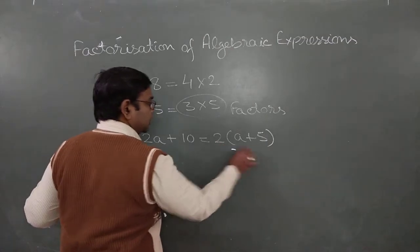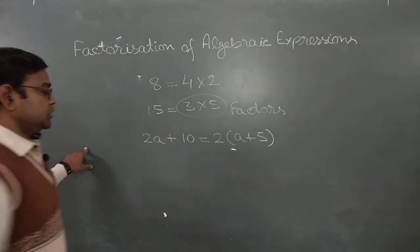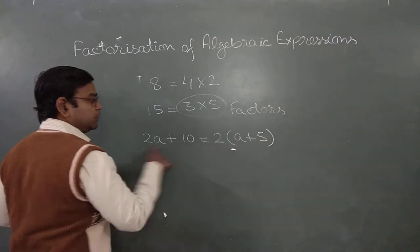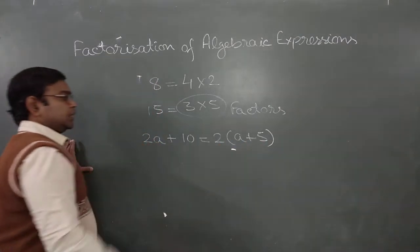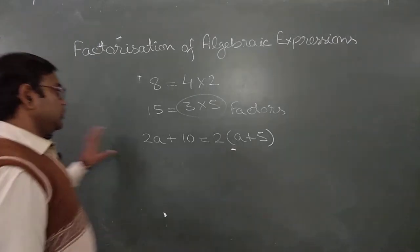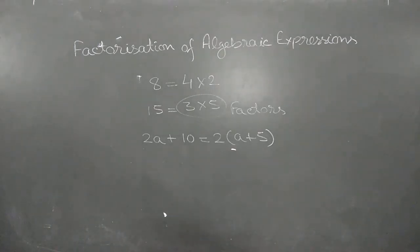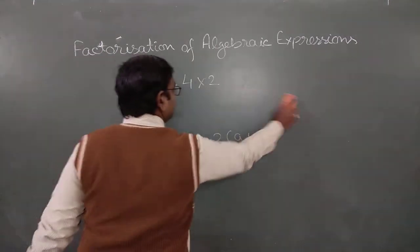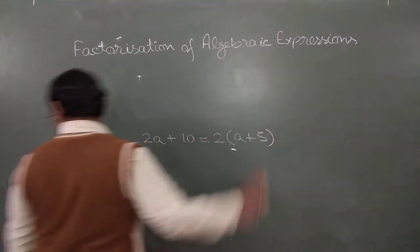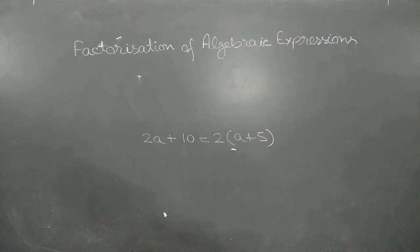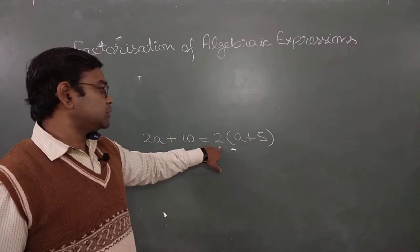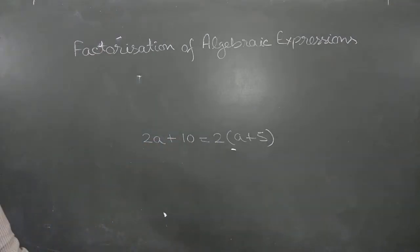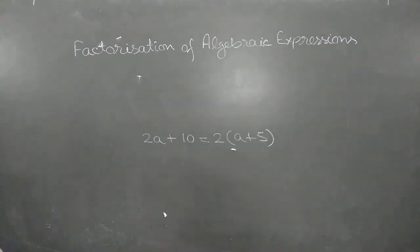This is known as factorization, and these are the factors of the expression. See, if we multiply 2 with (a + 5), we have 2 into a equals 2a, and 2 into 5 equals plus 10. Today we are going to discuss some more questions on common monomial factors. Monomial means one term with power 1 and one variable. When only one term is common, we factorize using the common monomial factor.